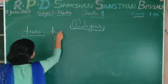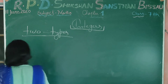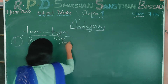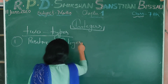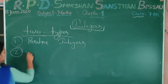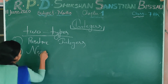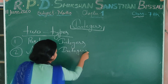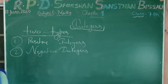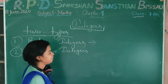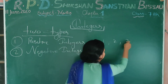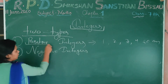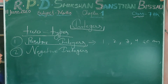The first category of integers: positive integers — for example, 1, 2, 3, 4 and so on. These are positive integers. The second one is negative integers.